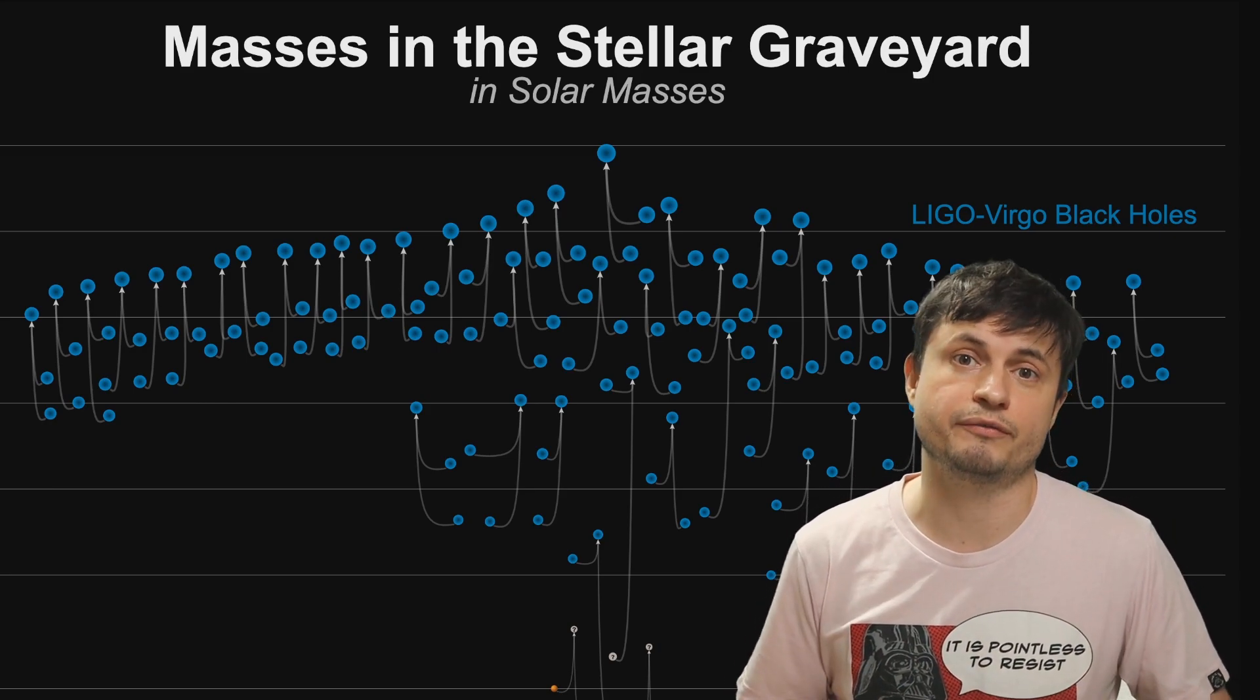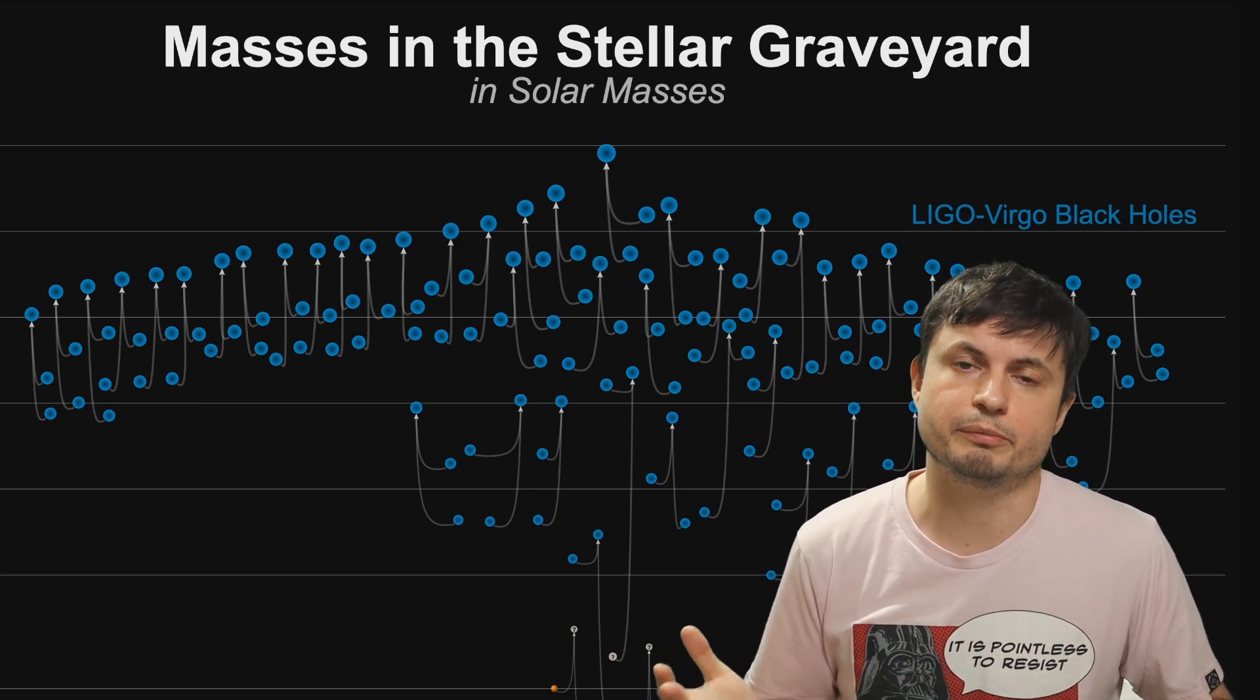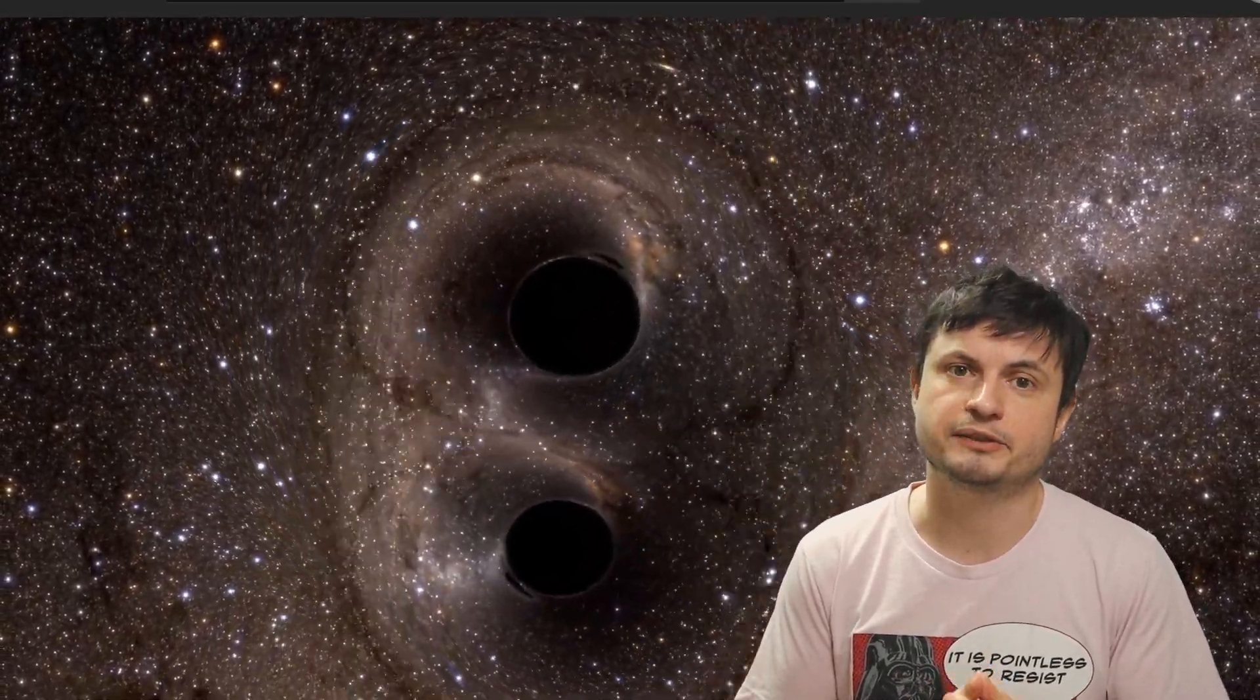Or basically, boson stars made out of axions, which in a nutshell represent dark matter. And so maybe some of the future studies and some of the future observations will help us answer some of these questions.